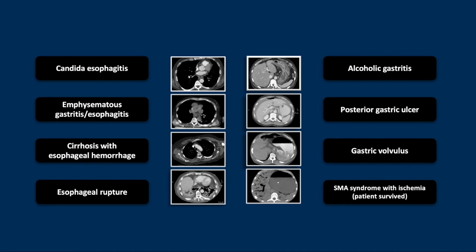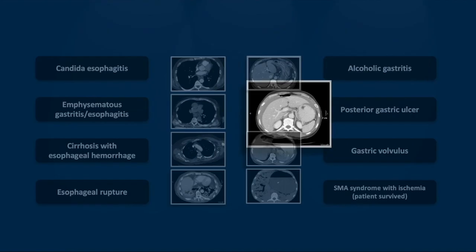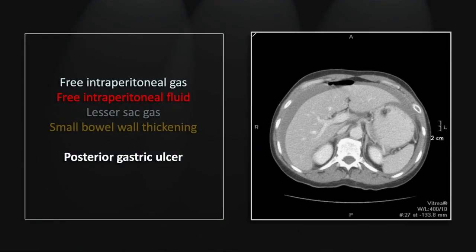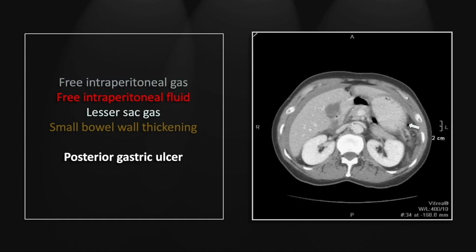Our next case is a perforated posterior gastric ulcer — a set of findings very worth knowing. There is intraperitoneal gas and intraperitoneal fluid. But on a lower cut, you can see foci of intraperitoneal gas and fluid, and in addition, small regions of lesser sac gas. That is characteristic of a posterior gastric perforation and in fact is highly specific.